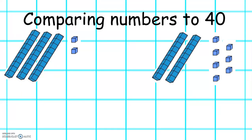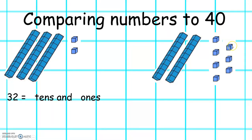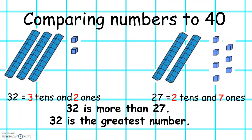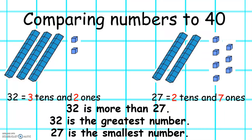We can compare numbers to 40 to find out which number is greatest and which number is smallest. Here we have 10, 20, 30, 31, 32. And here we have 10, 20, 21, 22, 23, 24, 25, 26, 27. So 32 has three tens and two ones. 27 has two tens and seven ones. So 32 is more than 27, or we can say 32 is the greatest number and 27 is the smallest number.